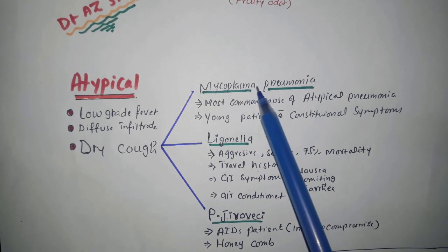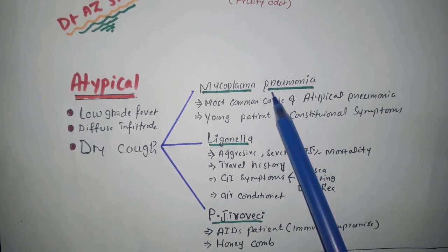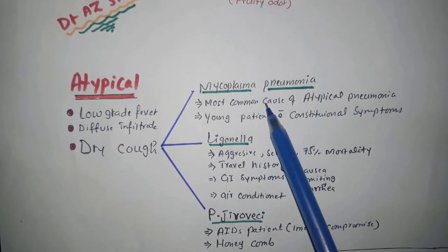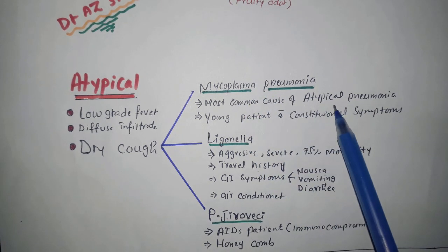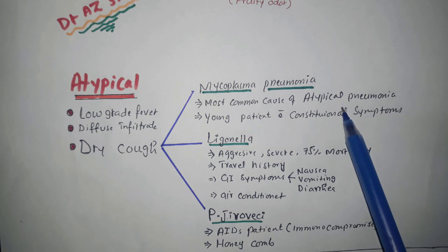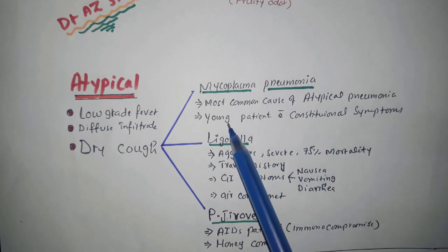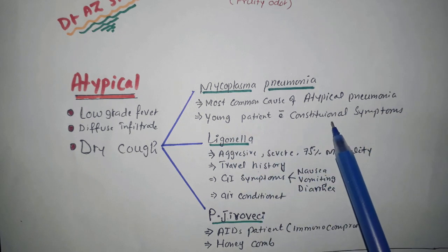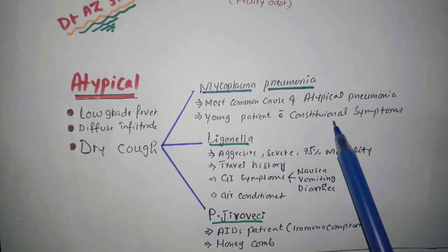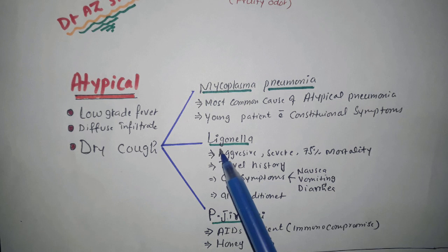Mycoplasma pneumoniae is the most common cause of atypical pneumonia. The patient is typically young with constitutional symptoms.